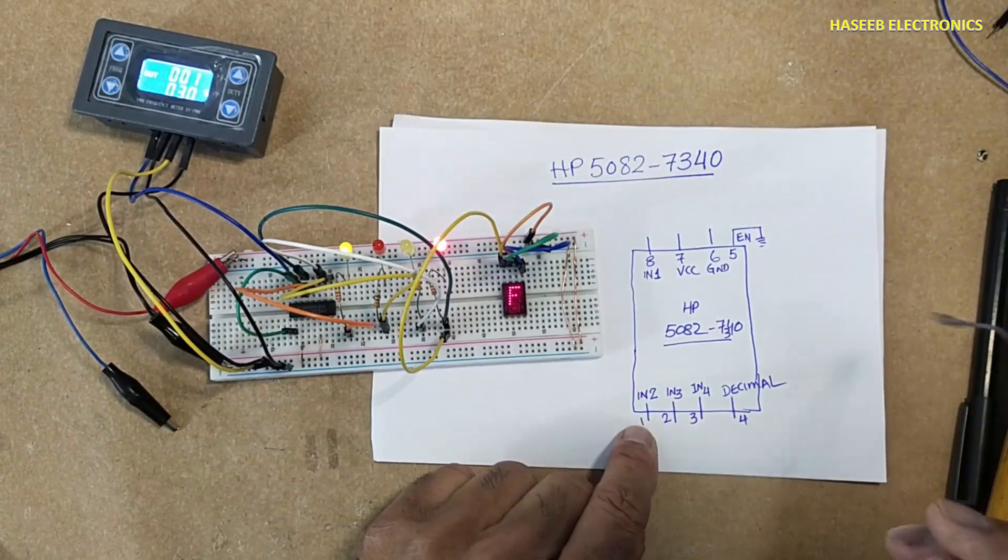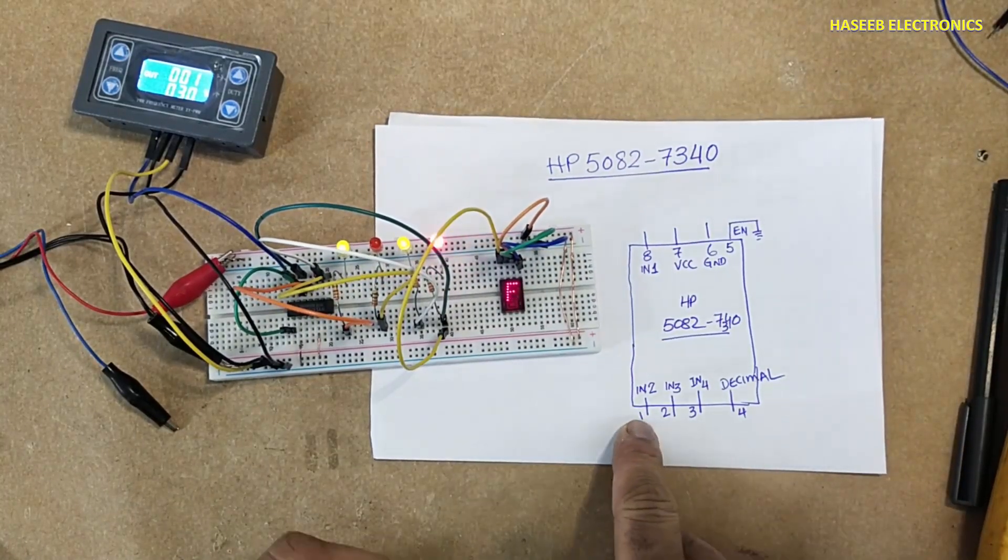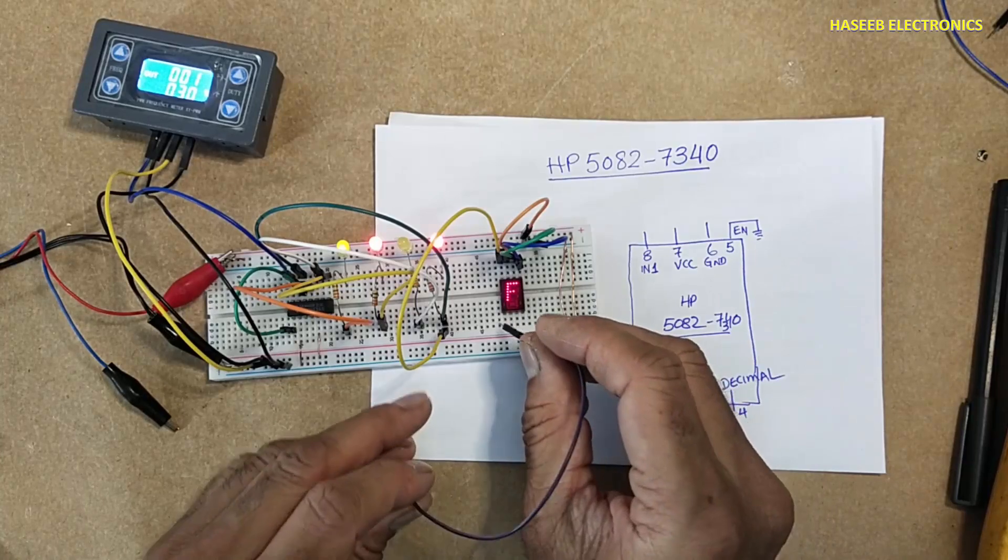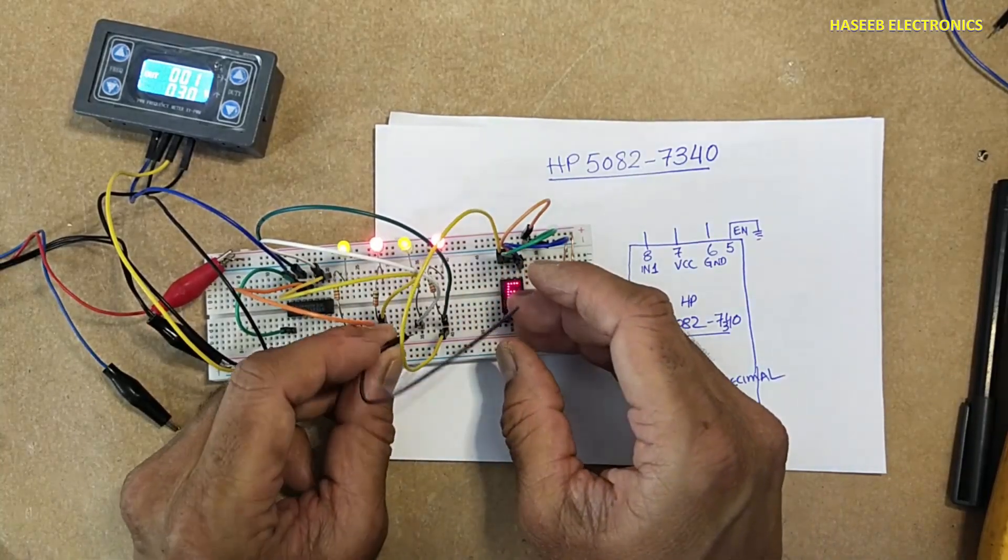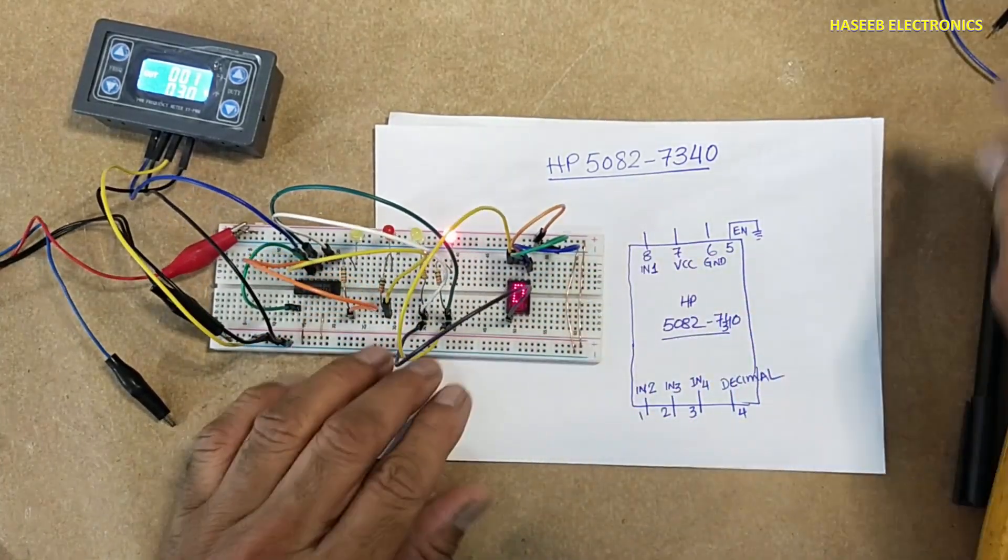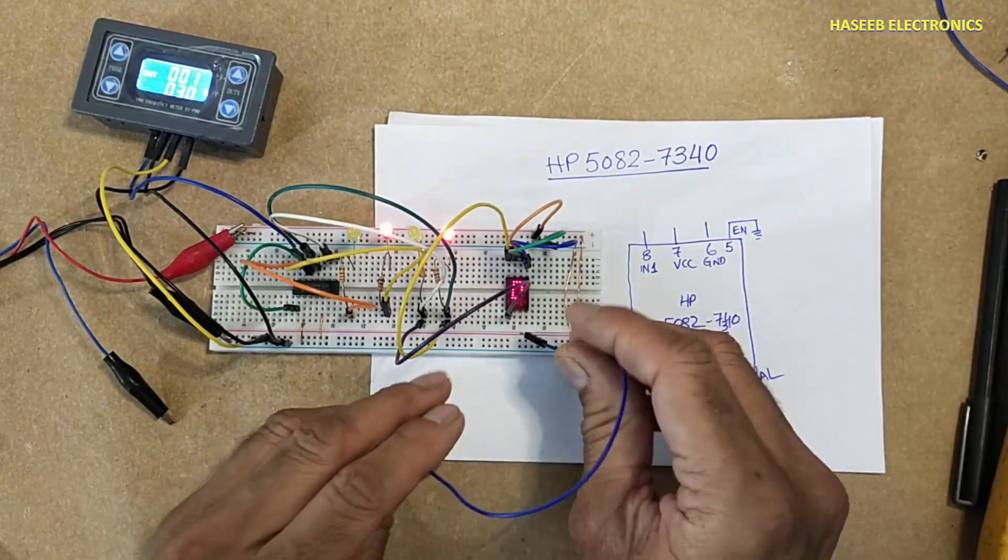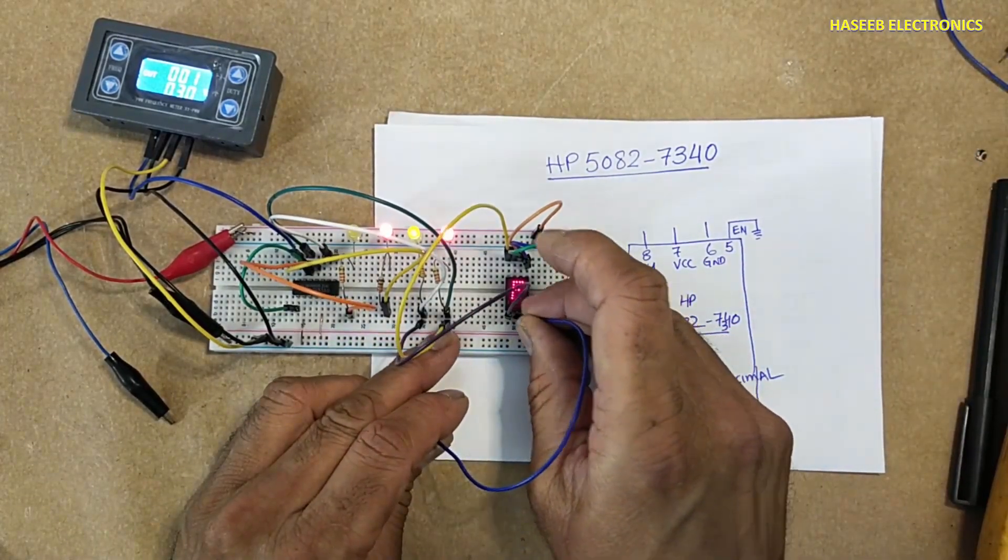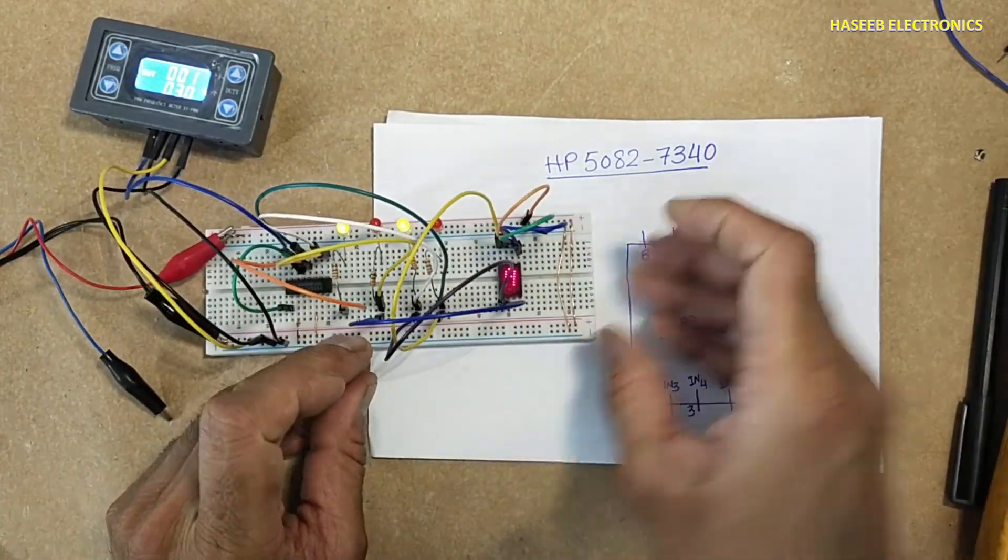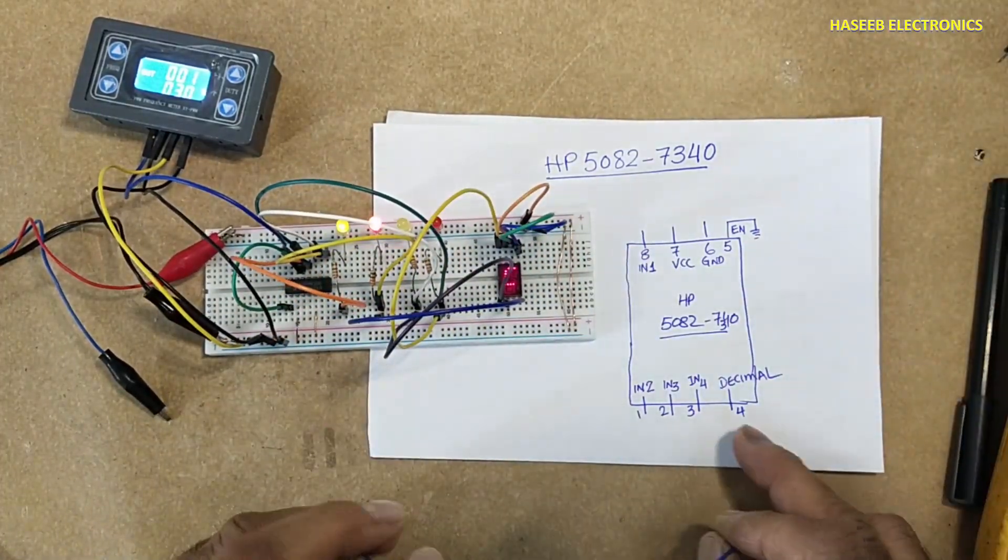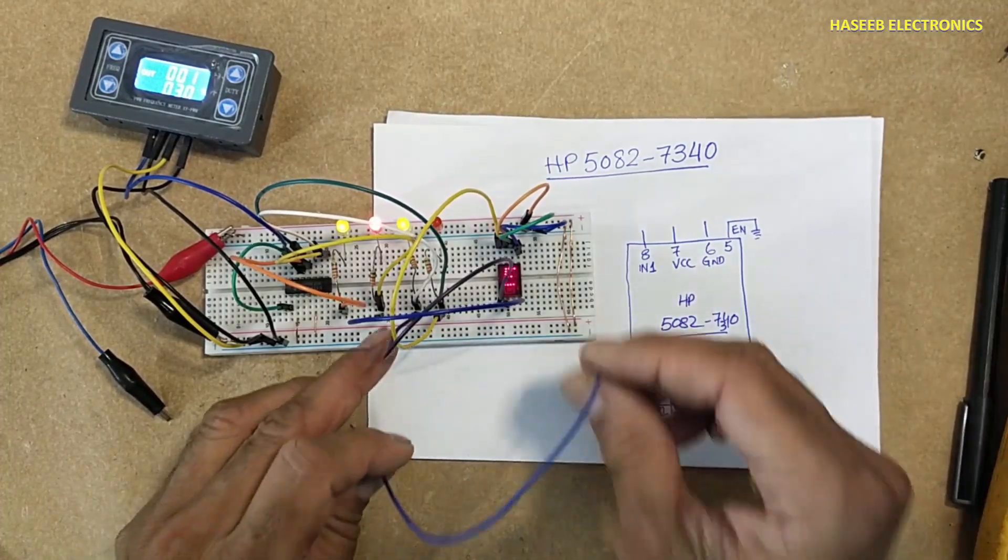Now in two, that is this one, pin number one, second bit. Pin three, third bit, that is position number four this one and position number three.